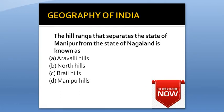The hill range that separates the state of Manipur from the state of Nagaland is known as: Option A: Aravali Hills. Option B: North Hills. Option C: Barail Hills. Option D: Manipur Hills. Answer is Barail Hills.